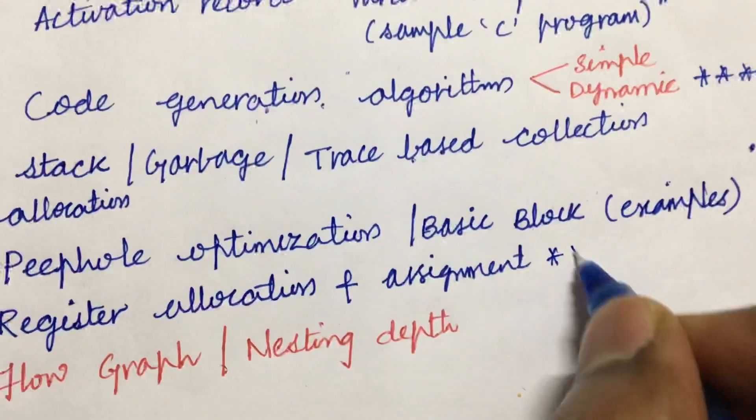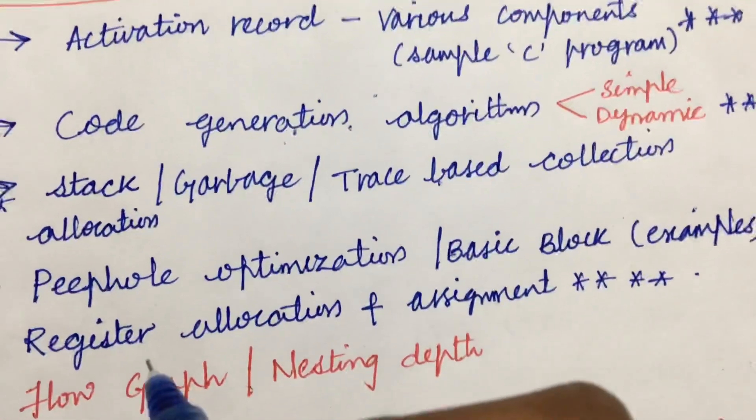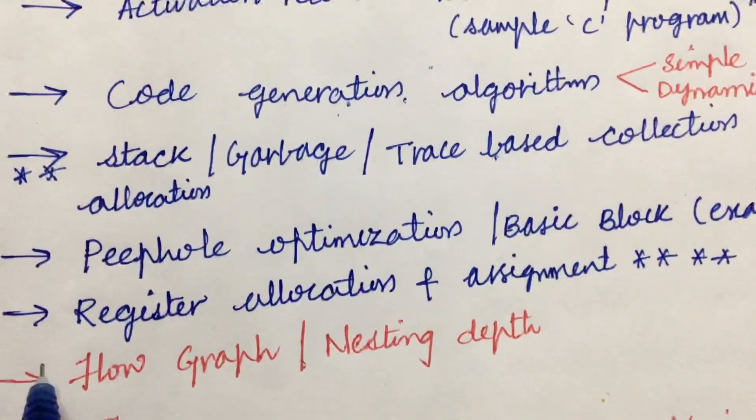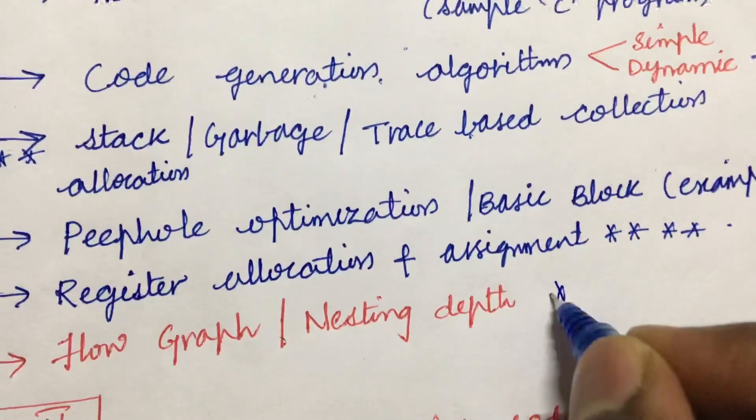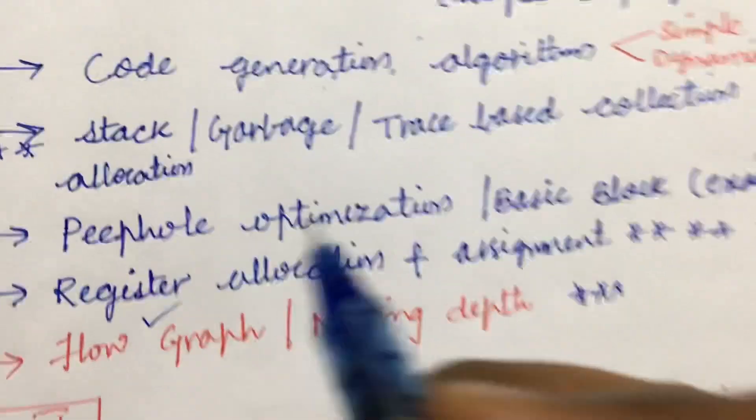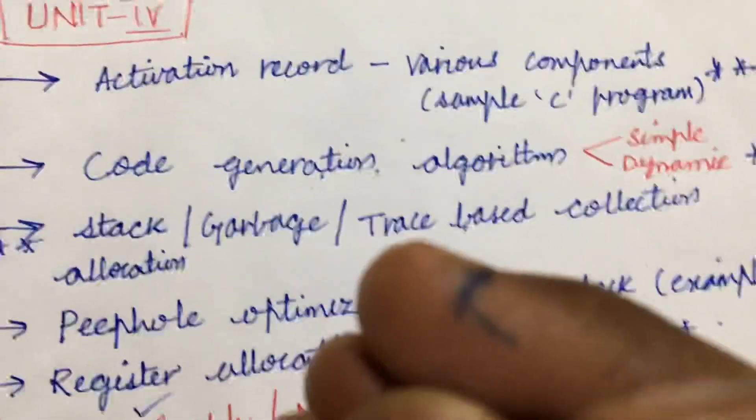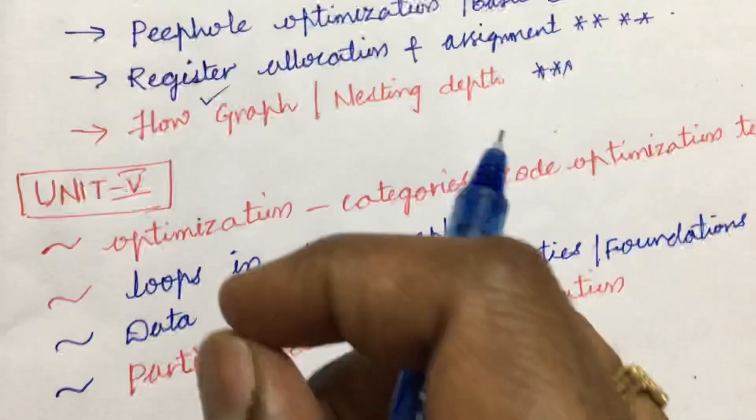The register allocation and assignment is asked several times for an eight-mark question, dear students. Do not expect a direct 15-mark question - it is a split of seven-eight or ten-five combination. Later, the flow graph as well as the nesting depth is also very important. Whichever things I have highlighted in red are asked several times. I hope you are getting my points.